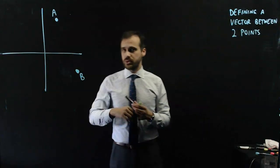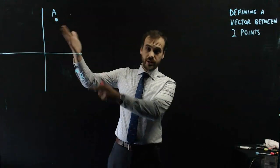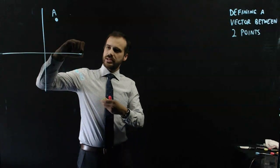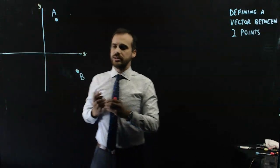Alright, so we're going to be defining a vector between two points here. Two points, you can see here. I've got a Cartesian plane, an x and a y-axis.